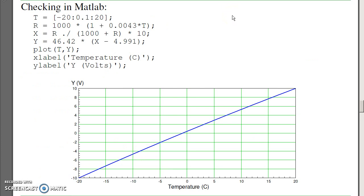In MATLAB, I can check my answers. As temperature goes from minus 20 to plus 20C, I find the resistance. I can find the voltage at x. This is ignoring the loading of the 464k resistors. The instrumentation amplifier has a gain of 46.42. There's my offset.